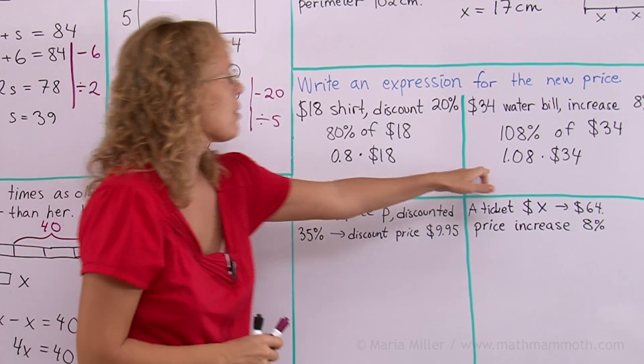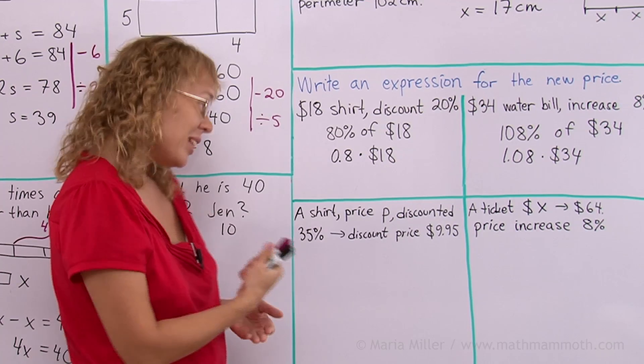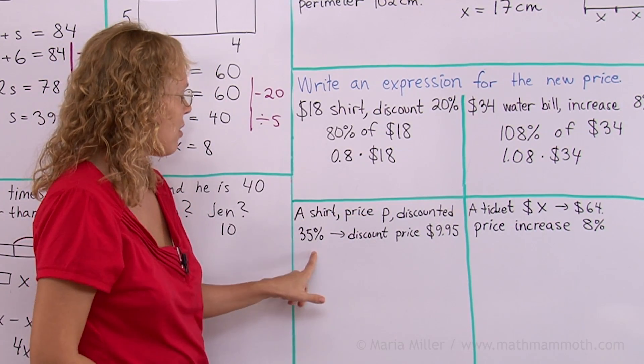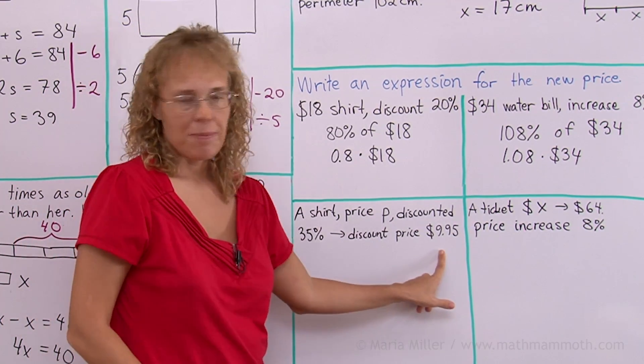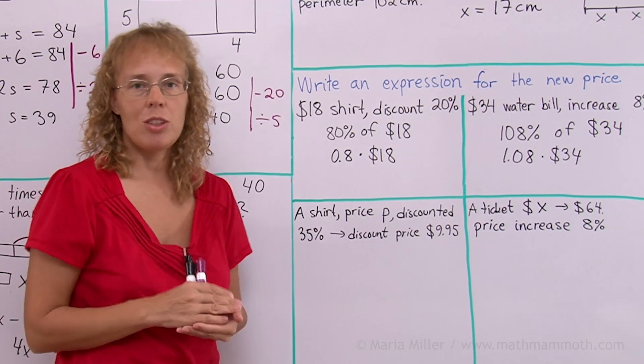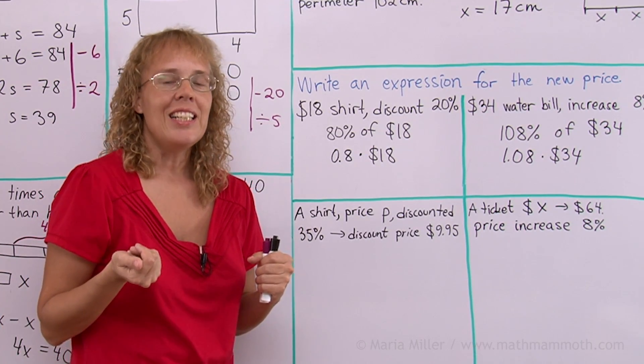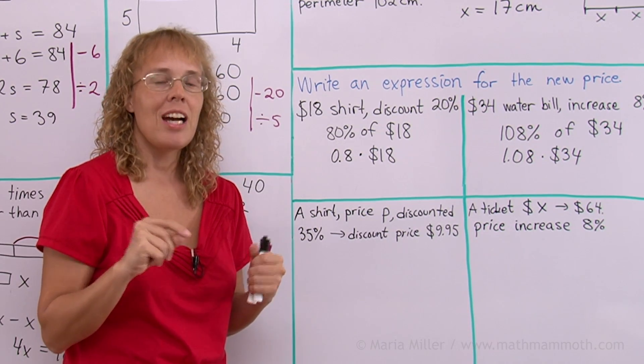Here we are going to use this technique as I showed here. A shirt whose price is P or it's unknown. Basically the price is unknown. And it is discounted by 35%. And the new discounted price is given. It is $9.95. Let's say you are a merchant. You are the store owner.